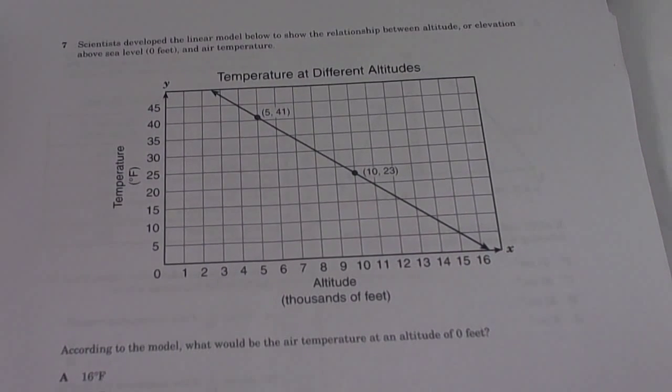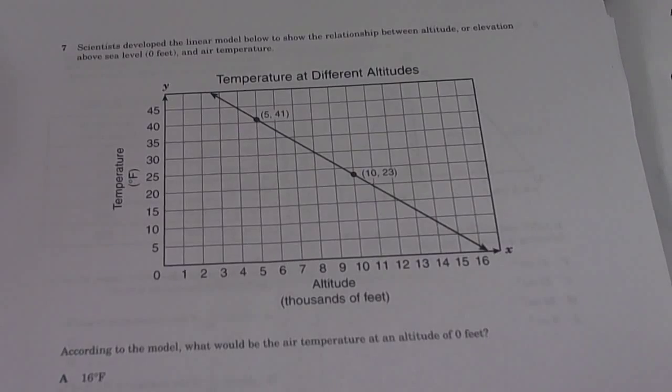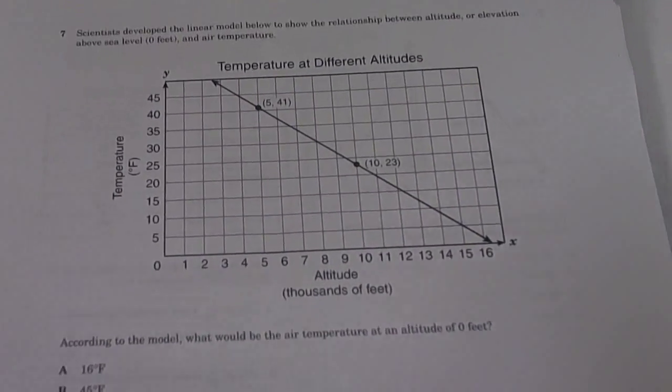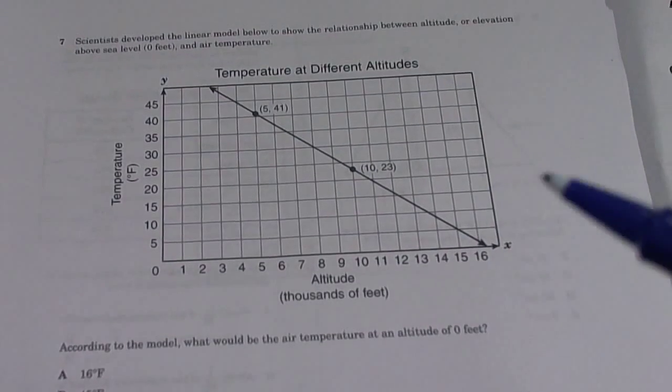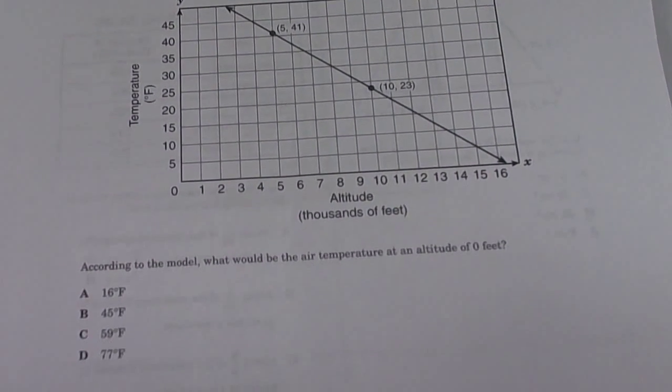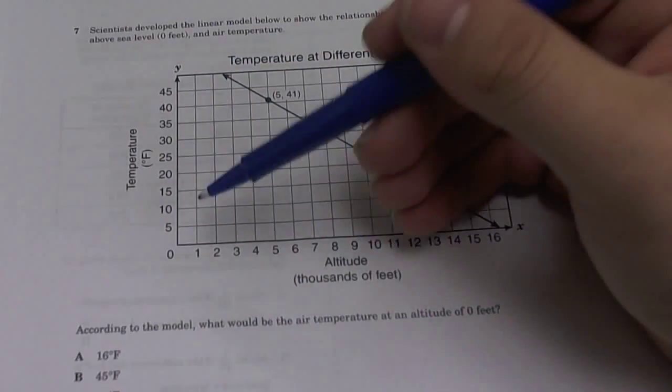All right, scientists developed a linear model below to show the relationship between altitude or elevation above sea level and air temperature. According to the model, what would be the air temperature at an altitude of zero feet? So plug it in.